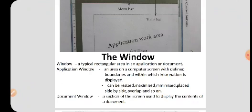The next one is document window. Inside the application work area — that is called the document window. A document window is a section of the screen used to display the contents of a document.